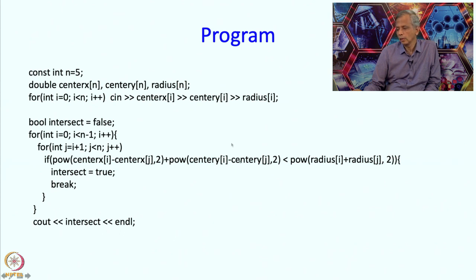Power of center of i minus center j squared is this xi minus xj squared term. This is center y minus center j power 2, so this is yi minus yj squared. And as I said, I could have written a square root over here, but instead of that I am taking radius of i plus radius j and squaring it.